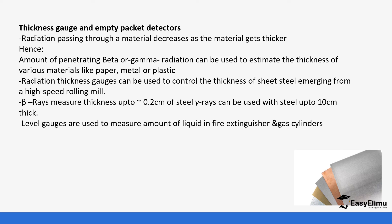Using that information, it is possible to check the thickness of a material — if a material is very thick, radiation cannot pass through. The amount of penetration of beta or gamma radiation can be used to estimate the thickness of various materials like paper, metal, or plastic. A radiation thickness gauge can also be used to control the thickness of sheets emerging from a high-speed rolling layer.